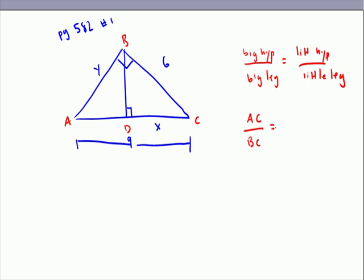And then since we're talking about geometric means, what's on top here is going to be the exact same thing, which is BC. And now we need to find a little leg that is on the big hypotenuse, and that is DC. So we're going to put that over DC.